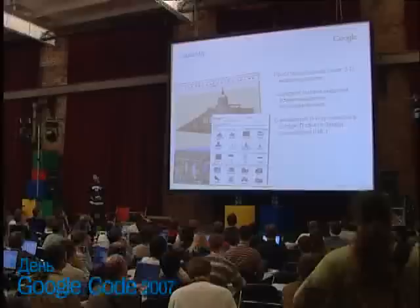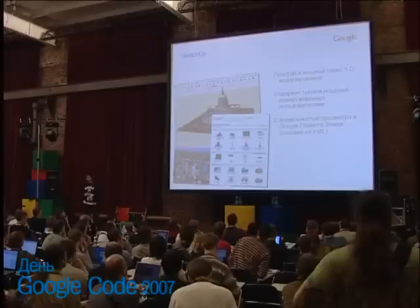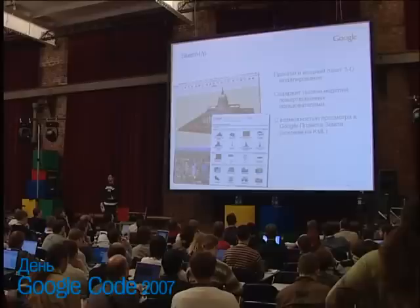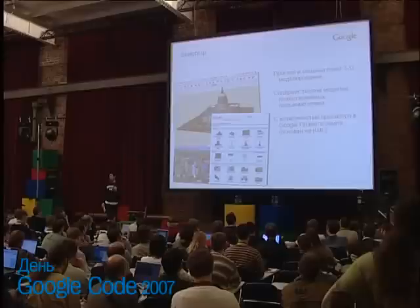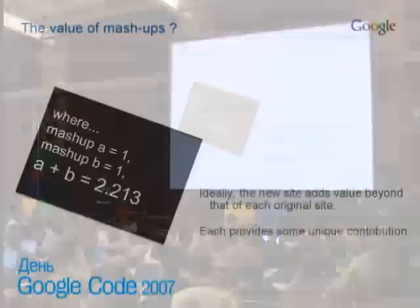We've got SketchUp. This allows you to build 3D models, converts them to KML, and allows you to import them into Google Earth. It's a very easy way to build 3D models — you can wrap textures around them, build models from photos, and import files from pretty much any other 3D rendering package. So it's a really useful tool that allows 3D artists to download a tool for free, build stuff, and get going.